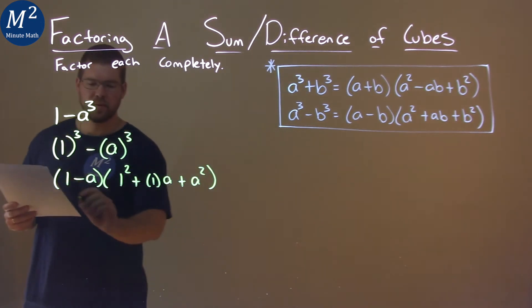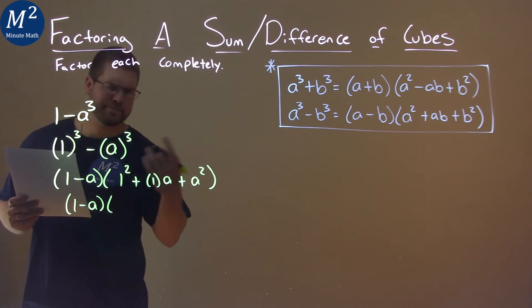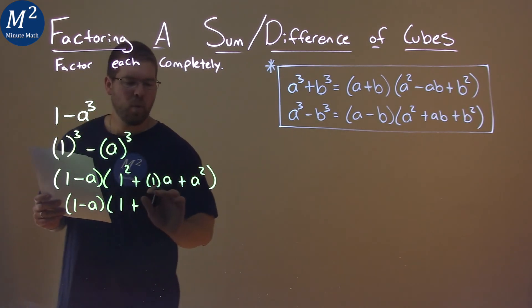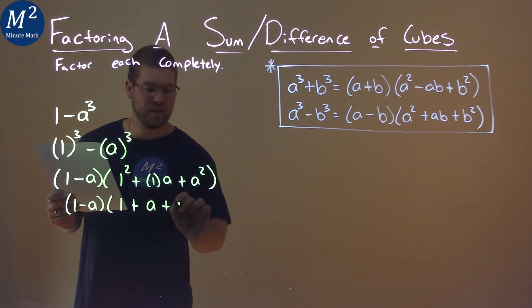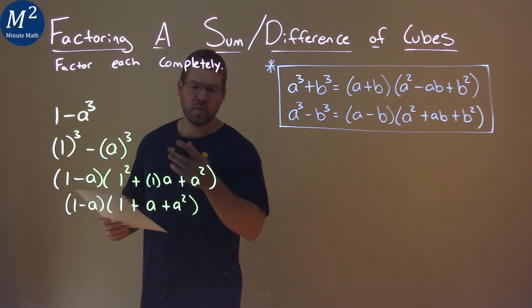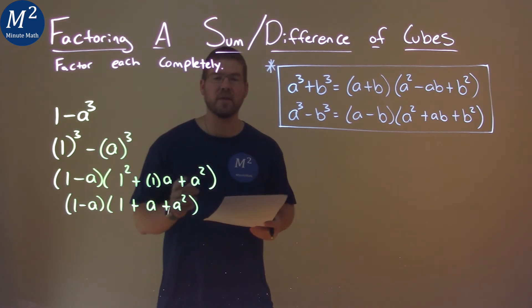So now let's go simplify. Well, one minus a really is as simple as it gets. One squared, just write one. One times a, we normally just write the a, and then plus the a squared. And so our final answer here is one minus a times one plus a plus a squared.